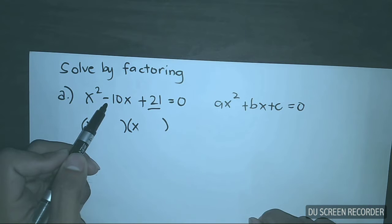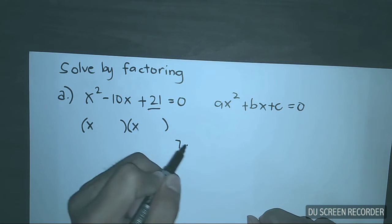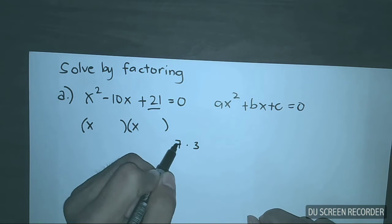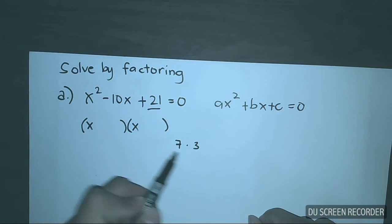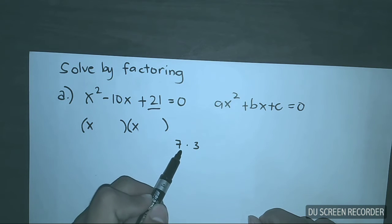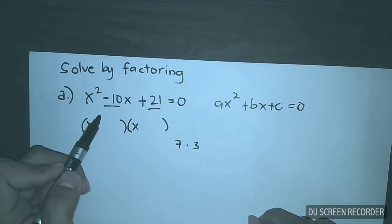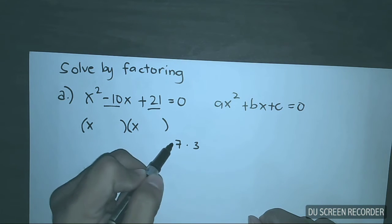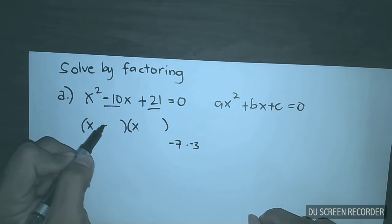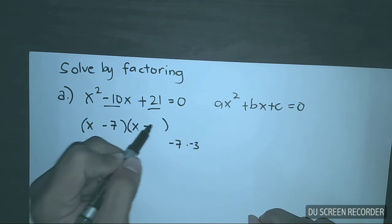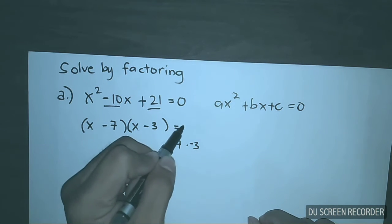The two numbers are 7 and 3. 7 times 3 will give you 21, but 7 plus 3 is equal to 10. Since our target is a sum of negative 10, both must be negative. So the factors are (x minus 7)(x minus 3) is equal to 0.